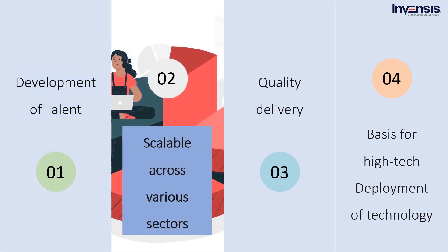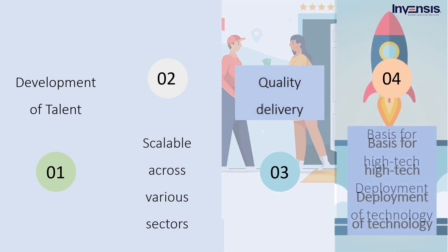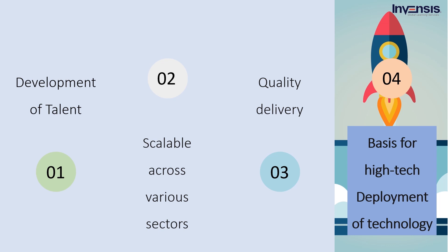The second benefit is that Lean Six Sigma is scalable across various sectors. Although there is a wrong perception that Lean Six Sigma is more applicable to manufacturing and engineering companies, in recent decades its application in other sectors such as BFSI, IT, and retail has demonstrated cross-sectoral capabilities. The third benefit enables quality delivery through efficient business processes. Data-driven decision-making, increased productivity, and greater transparency are direct benefits of Lean Six Sigma. A customer-centered quality focus ensures that customer voices are constantly heard and that services and delivery mechanisms quickly adapt to new market realities. Also, Lean Six Sigma is the basis for high-tech deployment of technology, leading continuous improvement initiatives coupled with digitization, and is critical to a successful digital transformation.